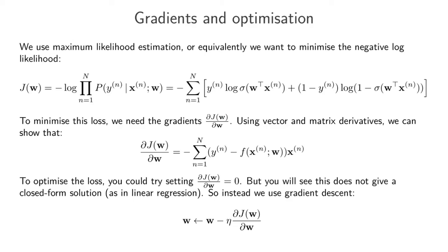To minimize this loss, we need the gradients of the loss function with respect to the parameter vector w. Using our vector and matrix derivatives from before, we can actually show that the partial derivatives of the loss function with respect to w, it reduces to a relatively simple equation, which is just negative the sum over all your training items, the label of each item minus the output of the model for that training item multiplied by the feature vector for that item.